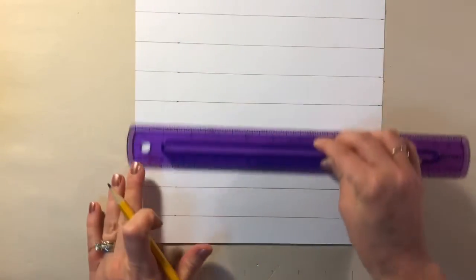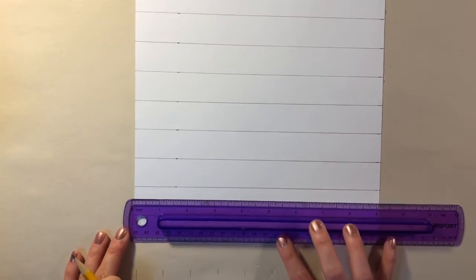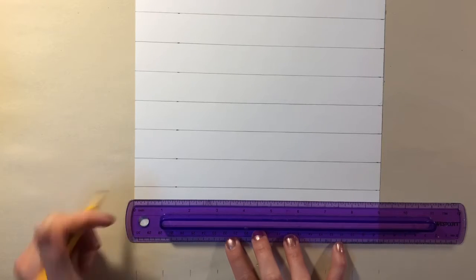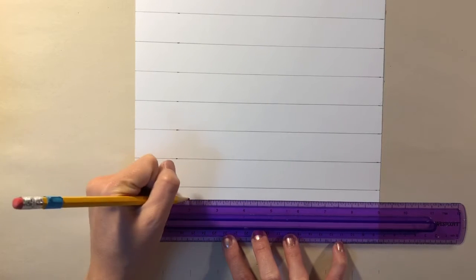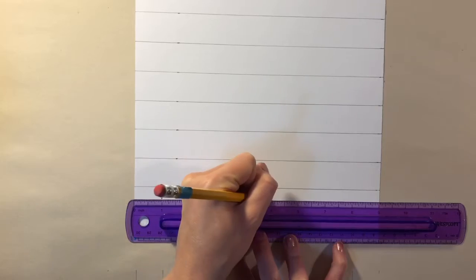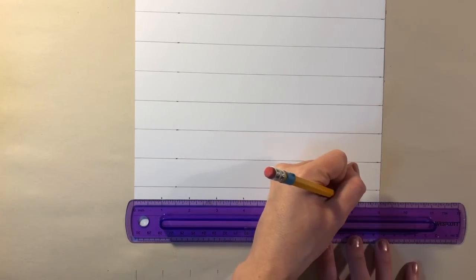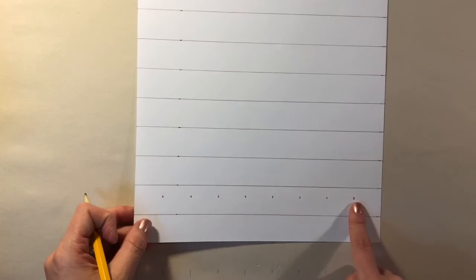Once you have that finished, slide down to the bottom of the page and repeat. So now you should have tick marks at the bottom and tick marks at the top.